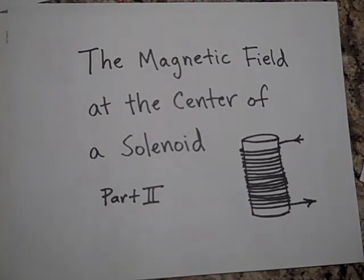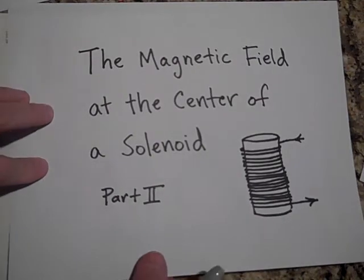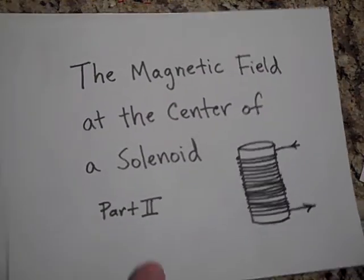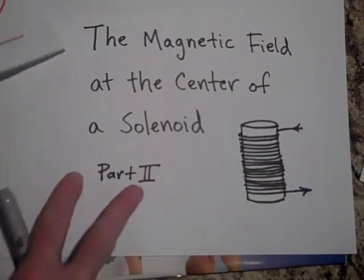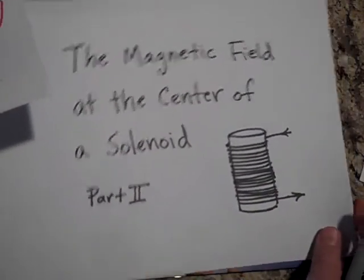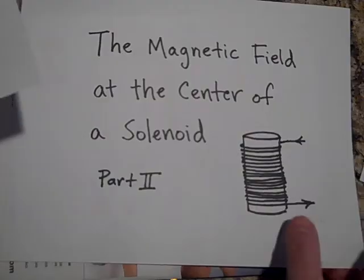Okay, so this is part two of the magnetic field at the center of a solenoid. I ran out of time on that last video. Remember that this is a solenoid, just a wire wrapped around a tube, maybe a cardboard tube. Lots of wire though.